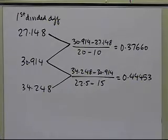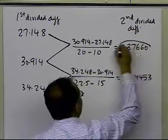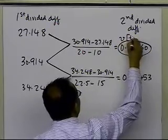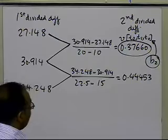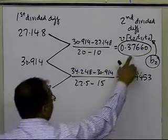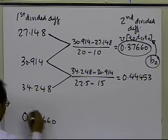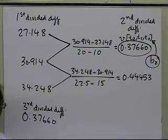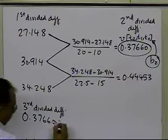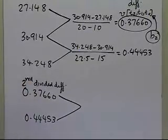What I have just calculated is the second divided difference. This one here is nothing but my second divided difference at the points t2, t1, and t0, which is nothing but my b2 — that's the third constant which I need. Now I'm going to take the second divided differences, 0.37660 and 0.44453, and use those to calculate the third divided difference.